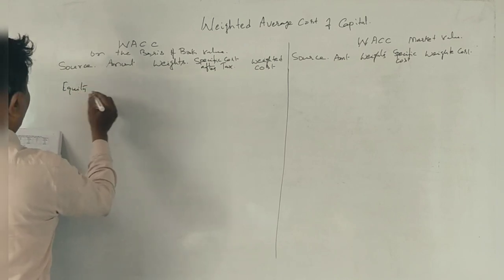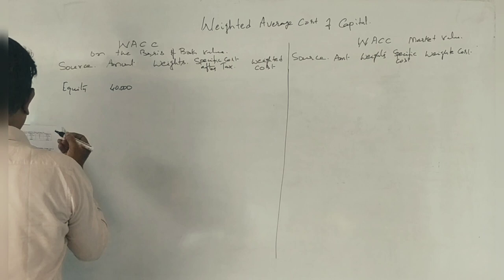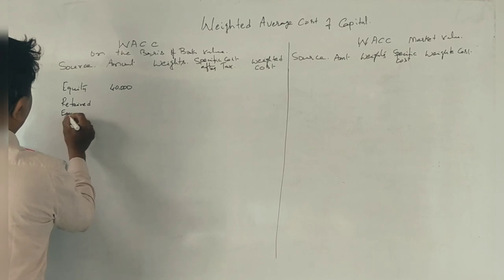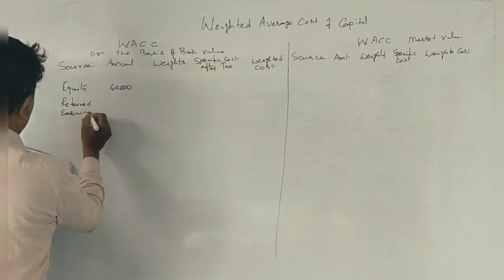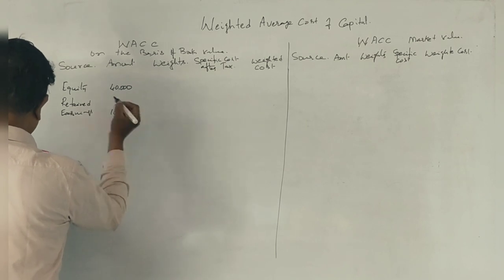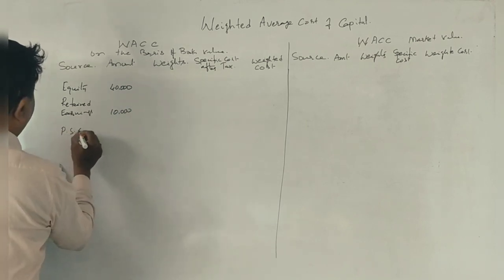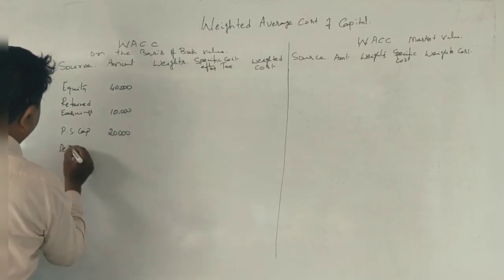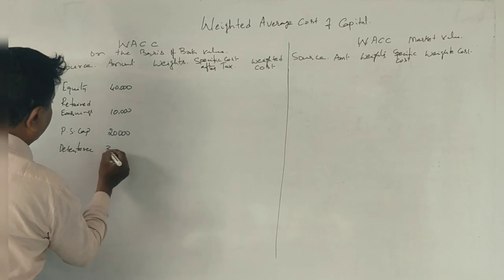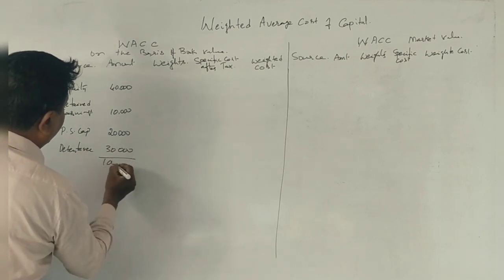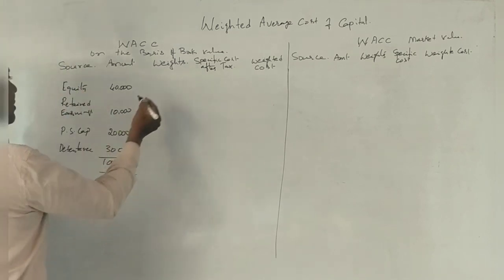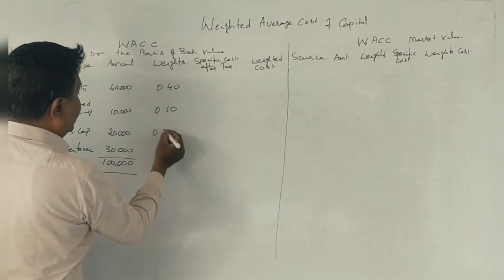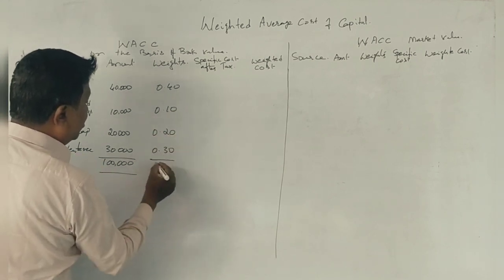The equity amount is 40,000. Retained earnings: 10,000. 10% preferential capital: 20,000. And debentures: 30,000. Total is 1,00,000. The weights are: equity 0.40, retained earnings 0.10, preference shares 0.20, debentures 0.30 — totalling 1.